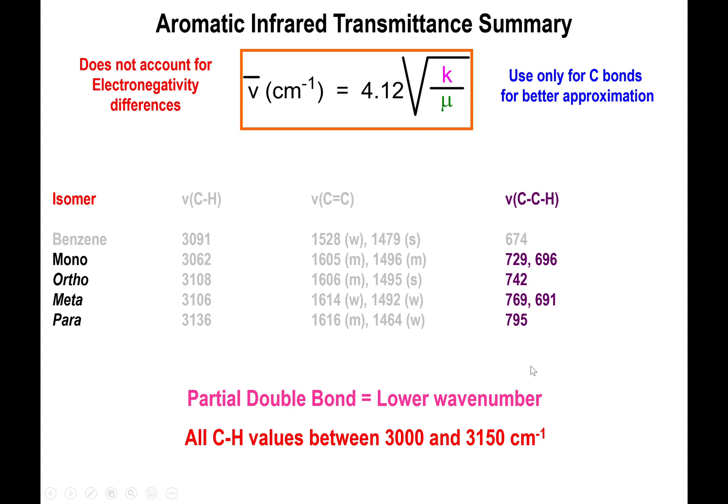What we do see is that we have a sequence of peaks that show up in the fingerprint region. Specifically if you have a mono substitution on your benzene ring you see two peaks, one at 729 or about 729 and another one close to 700. If you have two substitutions but they're right next to each other, so in the 1,2 positions, then you only see one peak at about 750.